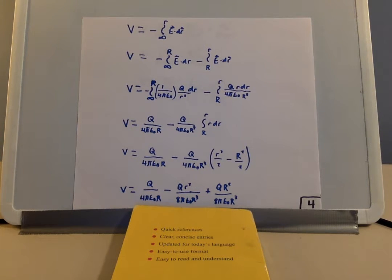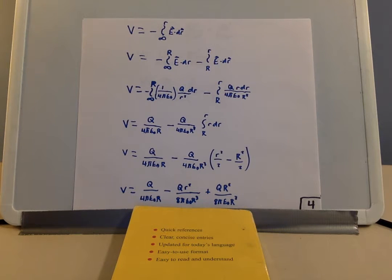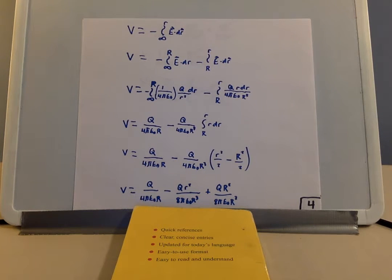Going down to the next step: we take the negative of the integral from infinity to big R, and substituting the electric field outside the sphere, that is one over four pi epsilon naught — which is k — times q over r squared, dr. Then we subtract the integral from big R to little r of q r dr over four pi epsilon naught big R cubed. That second integral uses the electric field inside the sphere that we calculated earlier.